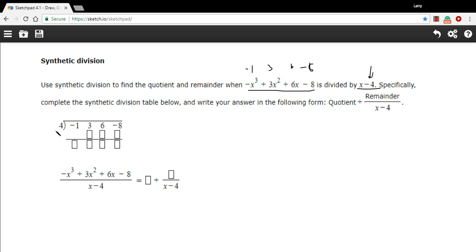So we've got the positive 4, the opposite sign of this number part of this term. And then we've got the coefficients in descending order of our polynomial.